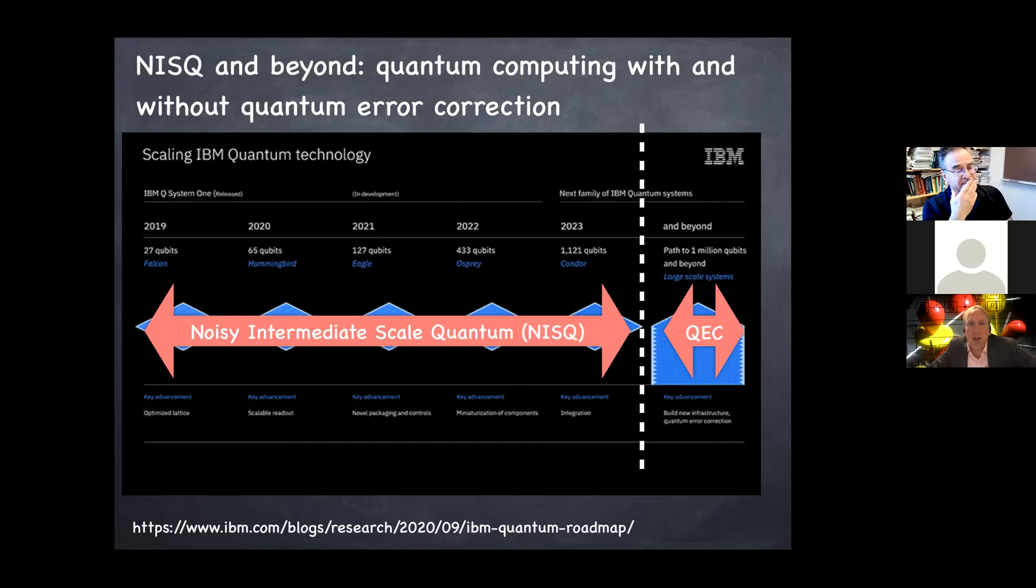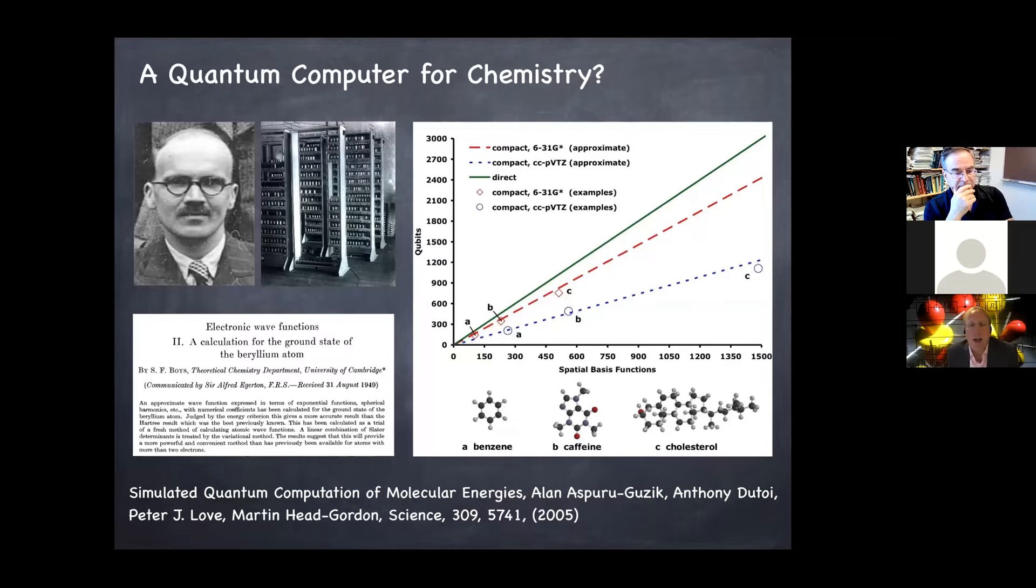And I want to start with the work that Sabri was referring to, which is the idea that quantum chemistry is a particularly nice application for quantum computers. So this was my first paper I wrote with Alain Aspuru-Guzik back in 2005. That was the start of an extremely enjoyable and long collaboration and friendship. And this is the figure that we made with various molecules in various basis sets.